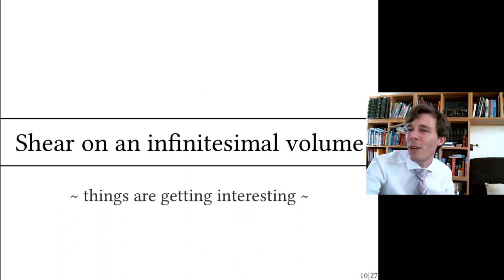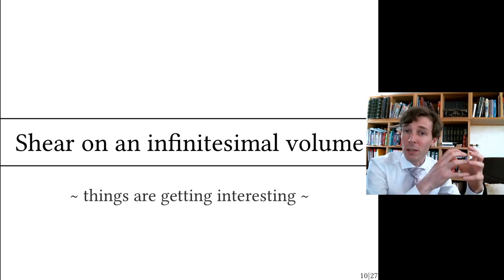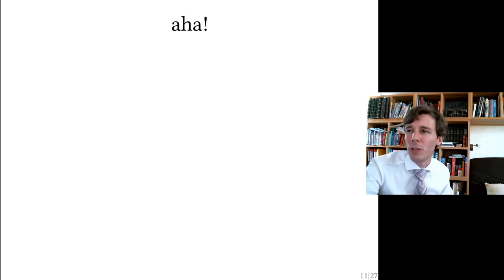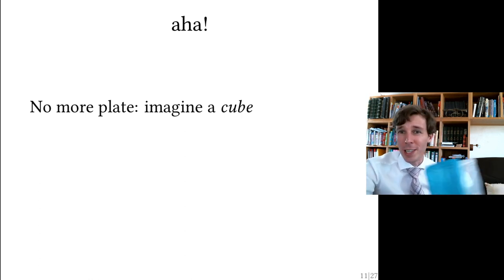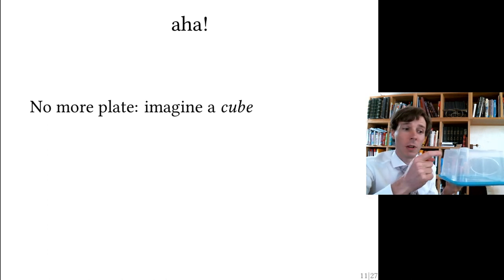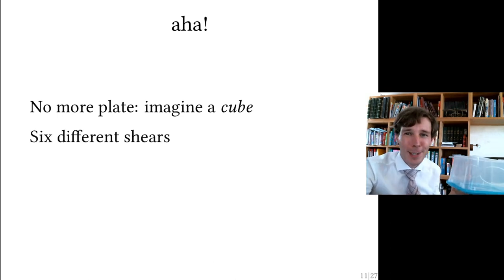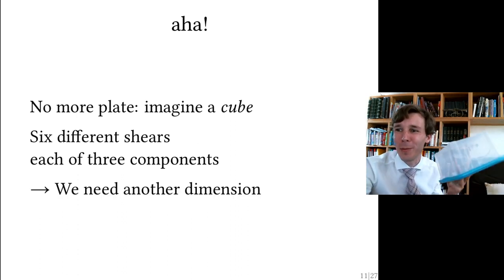Now let's apply this not just to points, but to small volumes — particles of fluid. As they flow around, they are subjected to shear on their faces, and we want to quantify the net effect. Because we now have a cube instead of a plate, we need to take into account shear with three components on each of the six surfaces of the cube. So we have six different shears, each with three components.